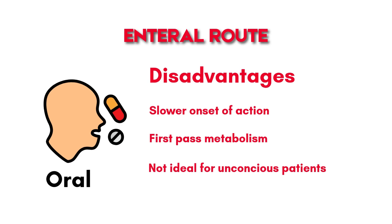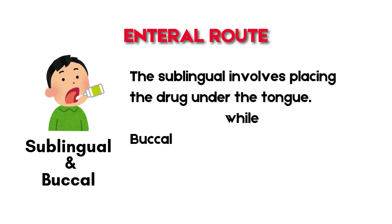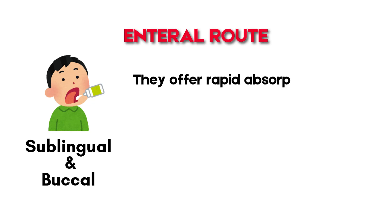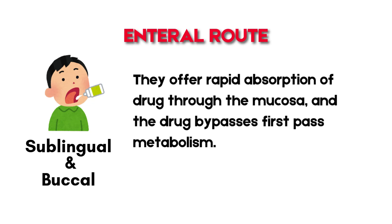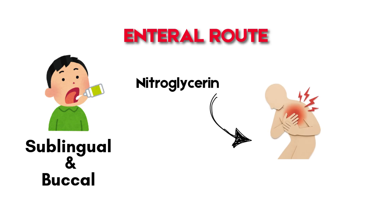The sublingual route involves placing the drug under the tongue, while the buccal route involves the cheek. They offer rapid absorption of drugs through the mucosa, and the drugs bypass first-pass metabolism. An example of a drug given via this route is nitroglycerin under the tongue for chest pain.